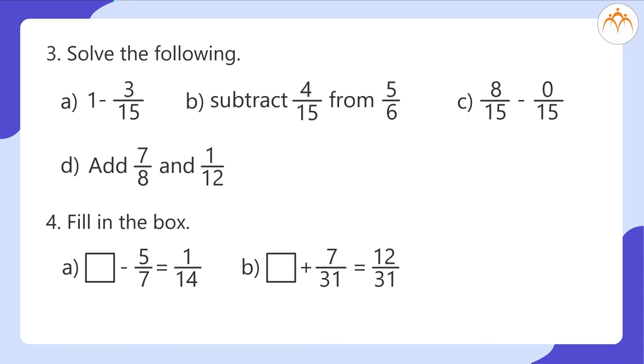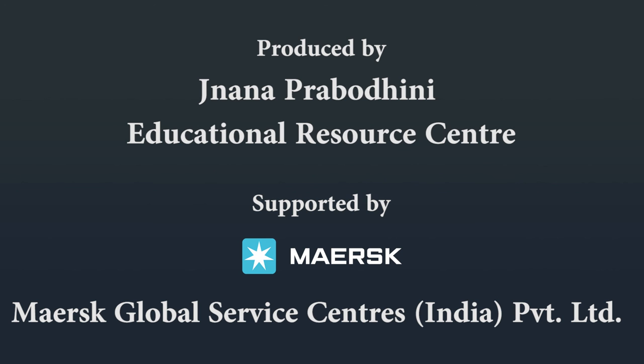Solve the following. 1 minus 3 by 15. Subtract 4 by 15 from 5 by 6. 8 by 15 minus 0 by 15. Add 7 by 8 and 1 by 12. Fill in the box. Blank space minus 5 by 7 is equal to 1 by 14. Blank space plus 7 by 31 is equal to 12 by 31.